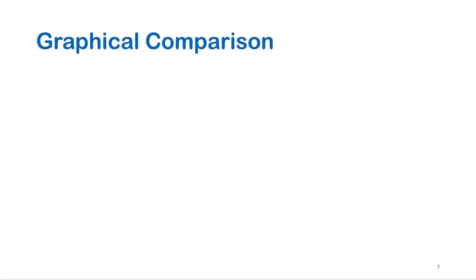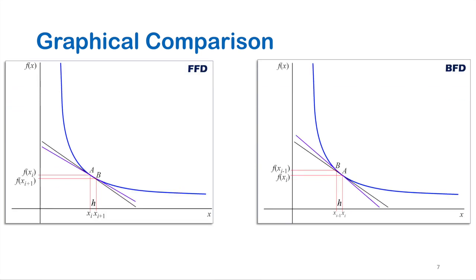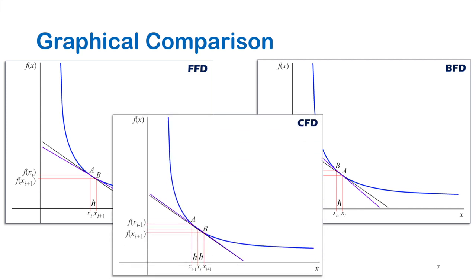To have a better understanding of the meaning of the order of the error, let's compare the graphs of the three types of finite differences methods using the same function curve at the same step size for the same point x_i. The forward and backward differences result in almost the same angle between the tangent and line AB, meaning they give a similar size of error with respect to h. While in central differences, the angle is so small that the two lines are nearly coincident. This clearly shows that this solution is much more accurate than the other methods at the same conditions.